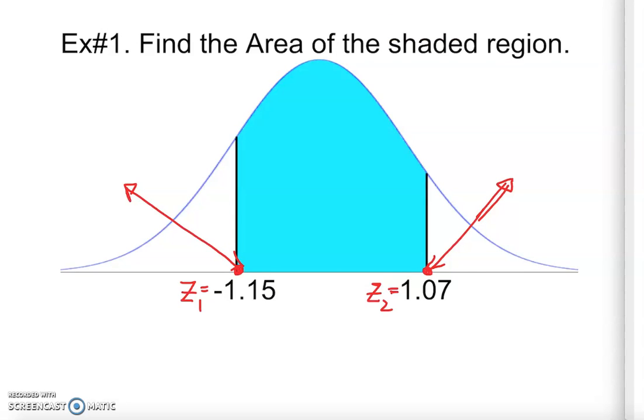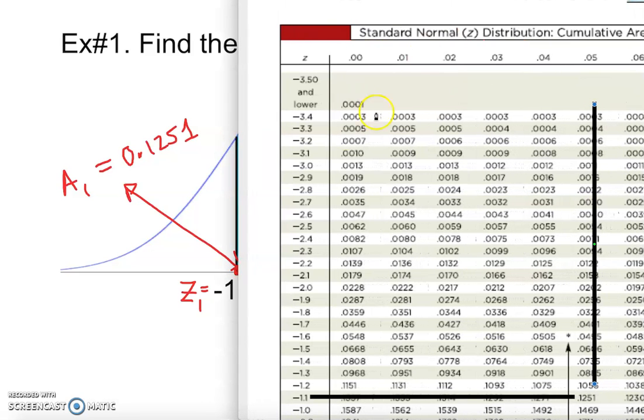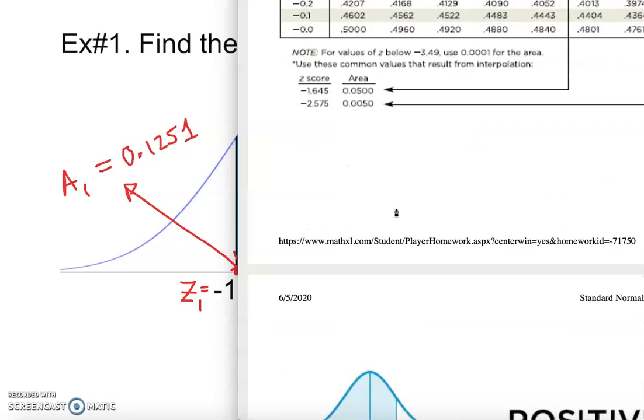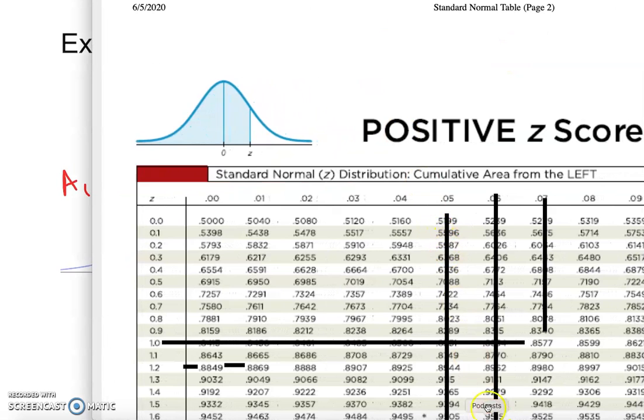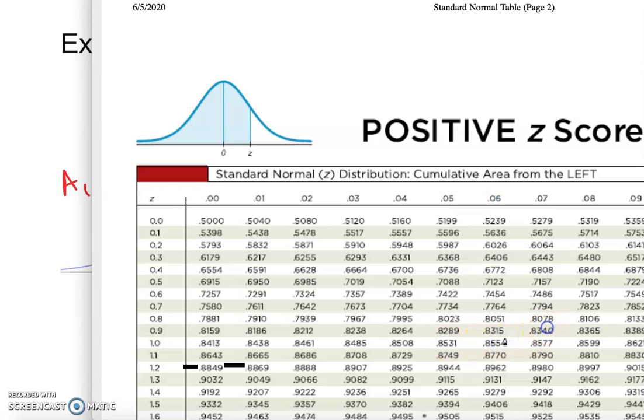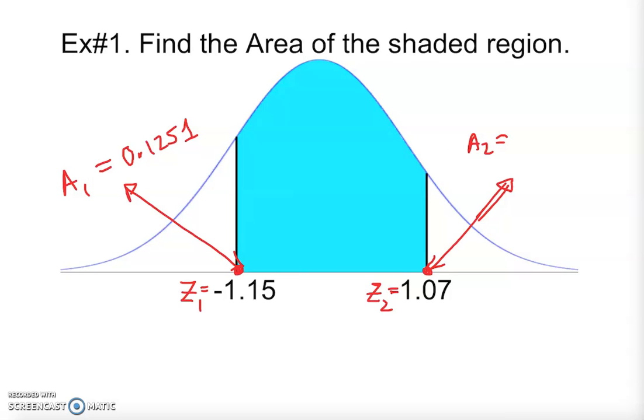Now we're going to look for area 2. Area 2 is 1.07, so this is positive - we're looking to the positive side. Let's go down here. So 1.0, I have so much stuff here. 1.0, we go all the way to 7, that's it. 0.8577, so we have 0.8577.